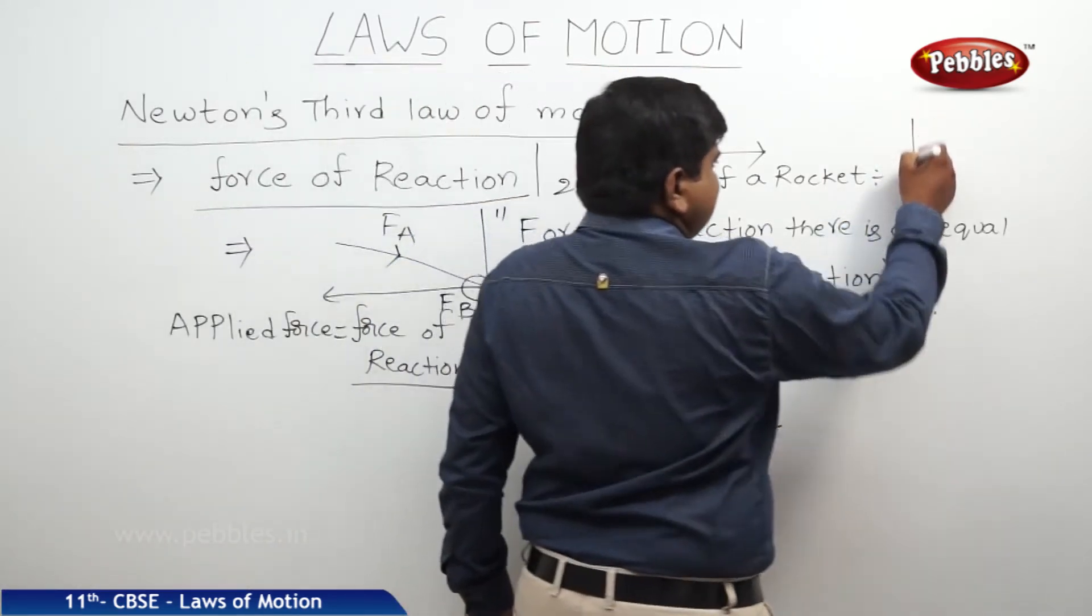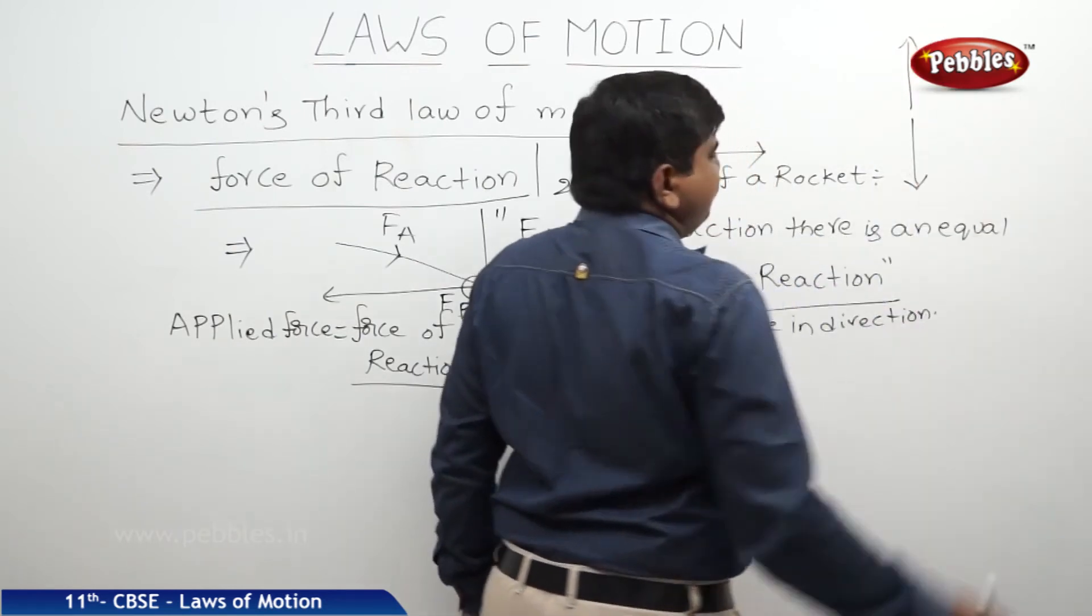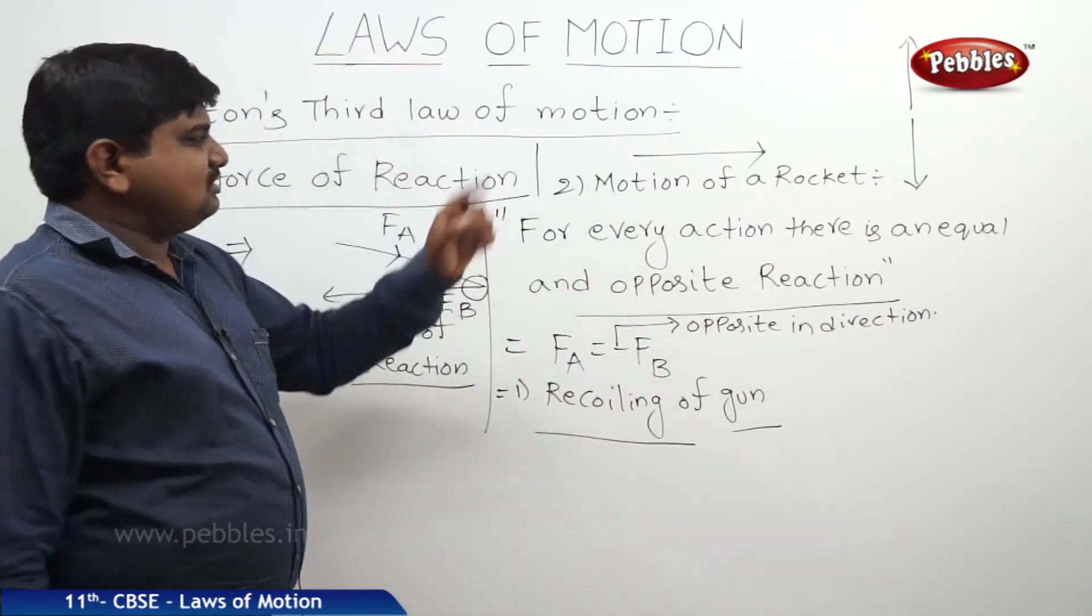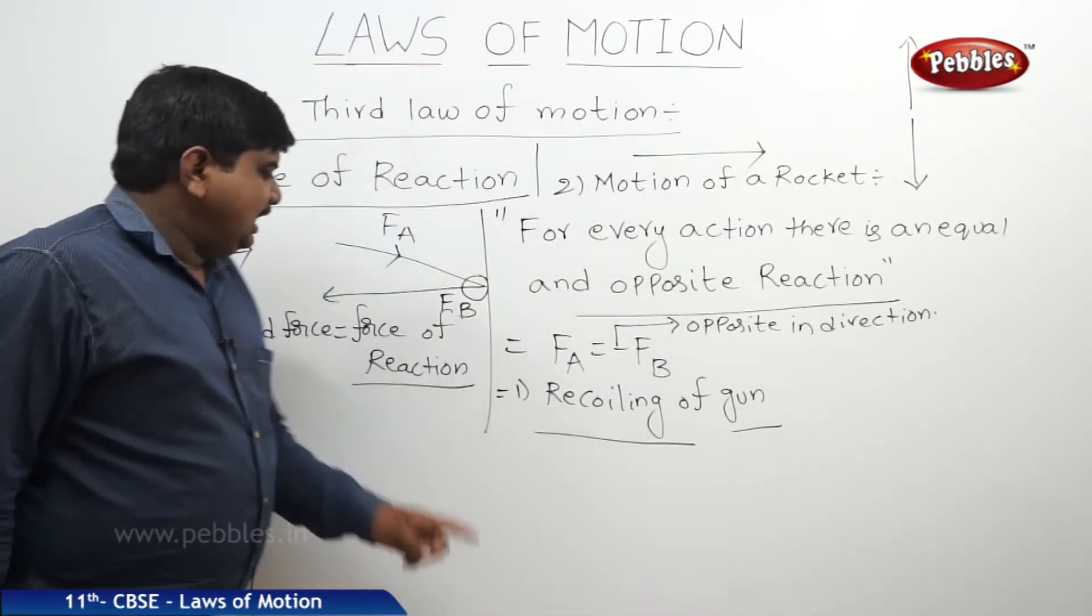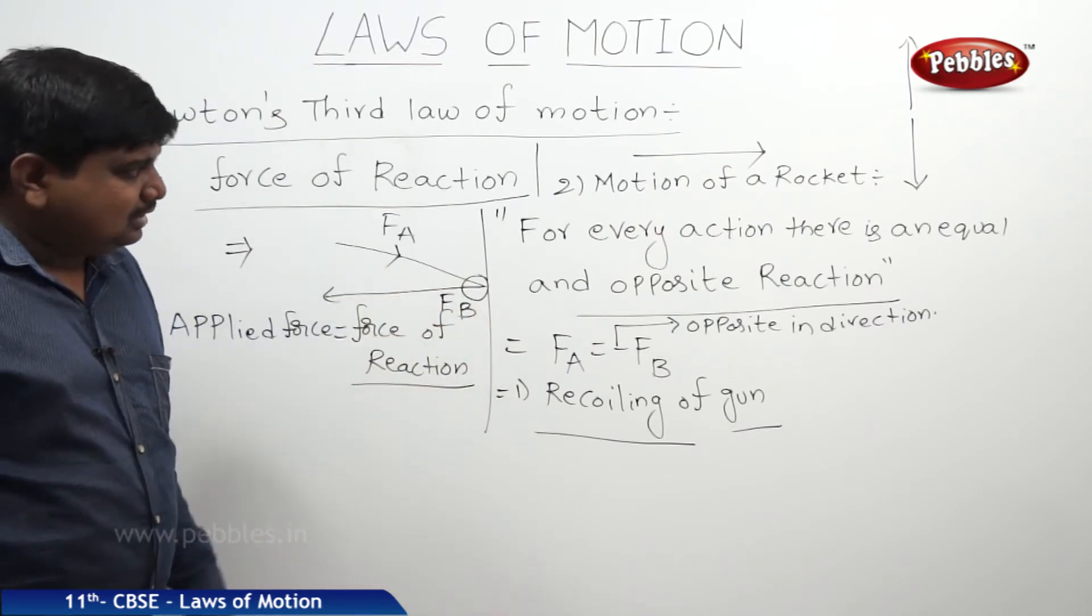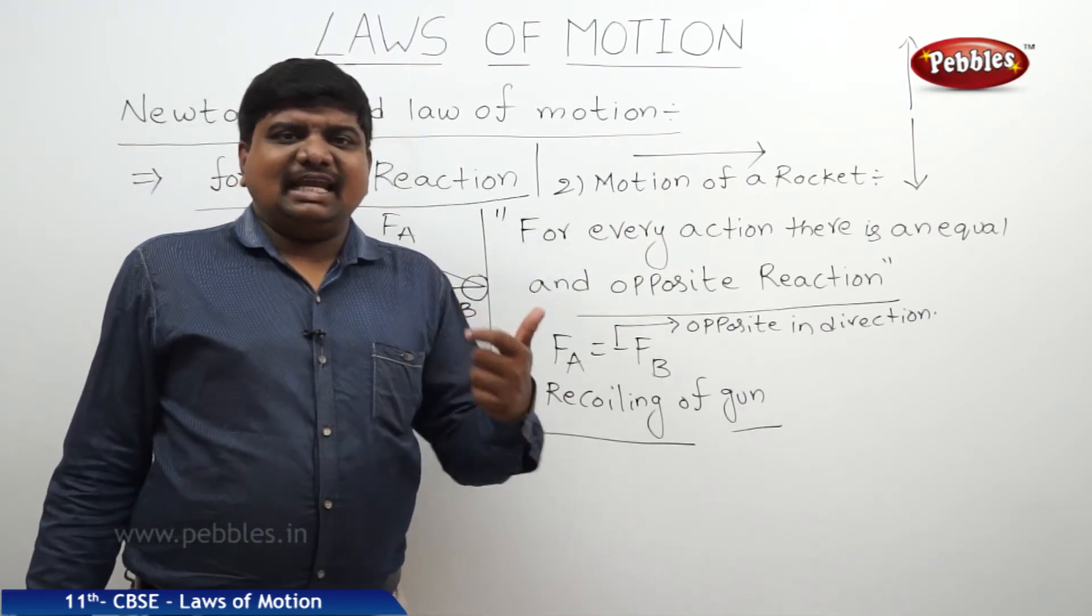That's why the force applied is in the downward. The force of reaction is in the upward. The motion of rocket also we can explain on the basis of Newton's third law of motion. Hitting a ball onto the wall and the ball will be coming towards the observer, this is also one of the example.